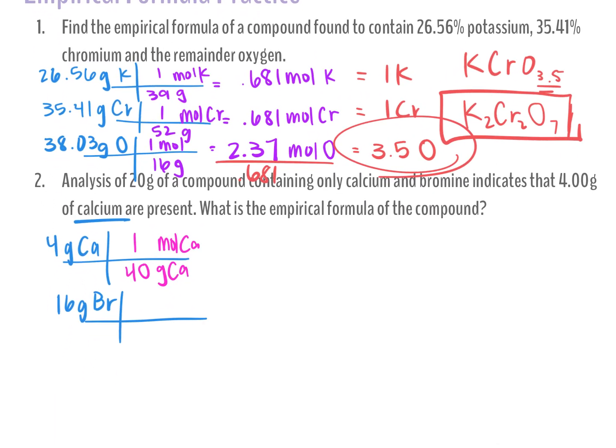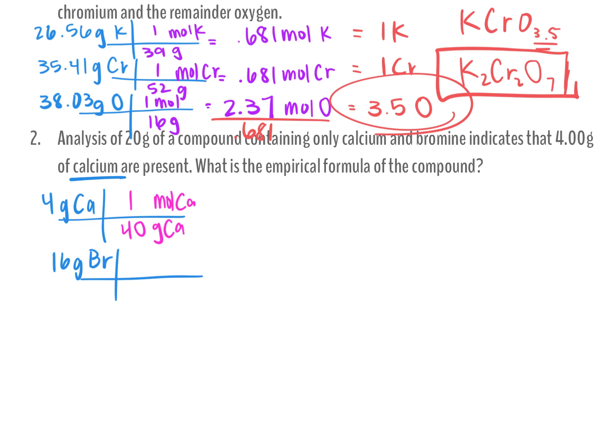I want you to try the next one on your own. Analysis of a compound contains only calcium and bromine. It says four grams of calcium are present, so you don't have to do the percent switch here — it's starting you in grams and you go from there.